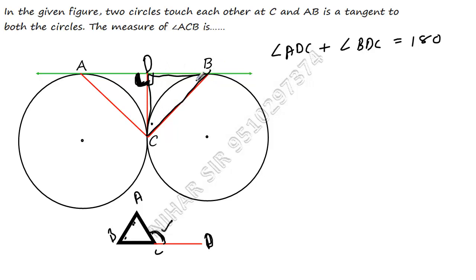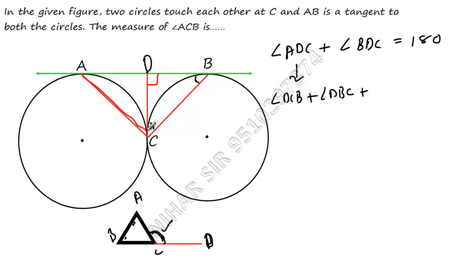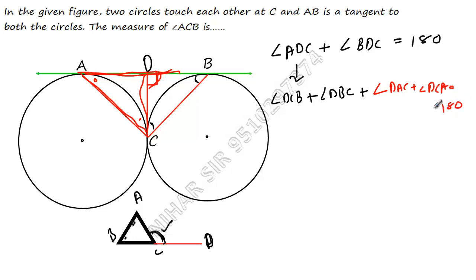So the exterior angle ADC will be equal to the sum of angles DCB and DBC. In the same way, angle BDC is exterior to triangle ACD, so BDC equals angle DAC plus angle DCA. Adding both equations together: ADC plus BDC equals DCB plus DBC plus DAC plus DCA, which equals 180°.